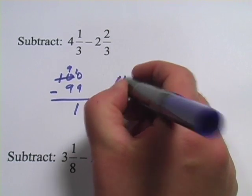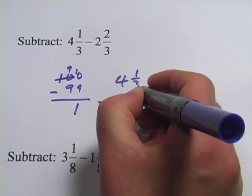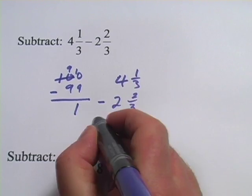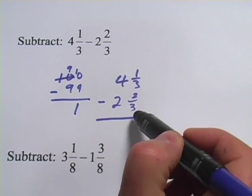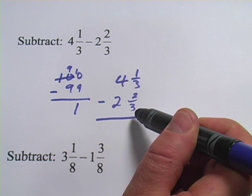I'm going to put these up here like this: four and one-third minus two and two-thirds. Now, we'll start with the fraction column. One-third minus two-thirds, well, one-third is smaller than two-thirds.